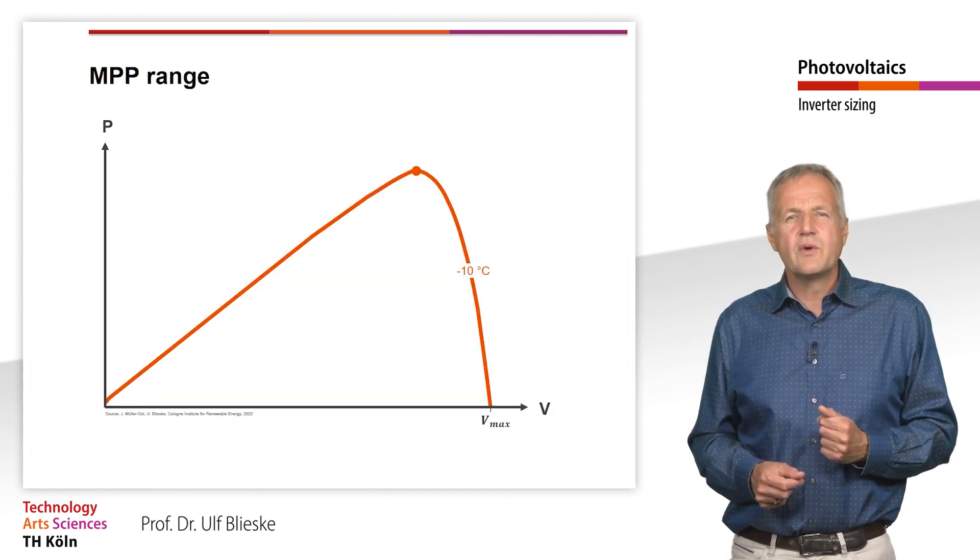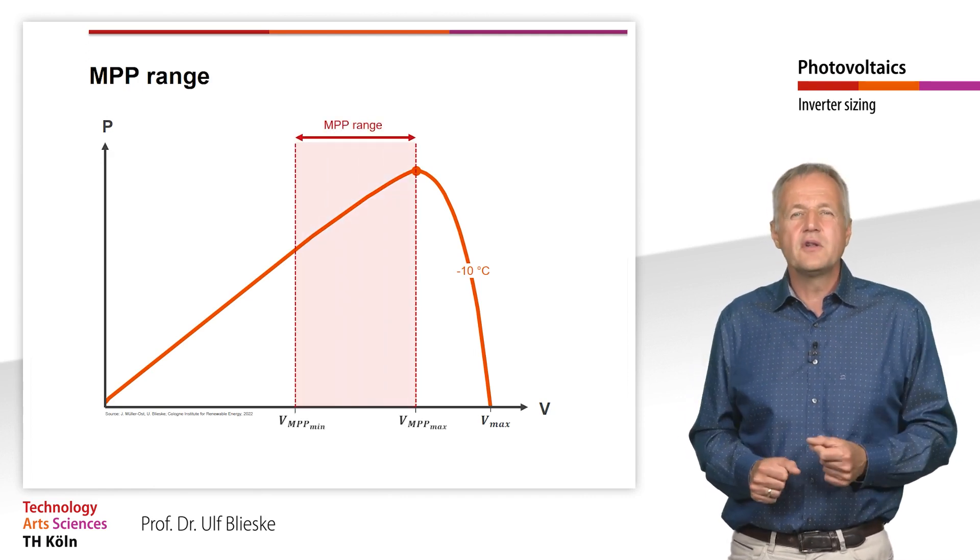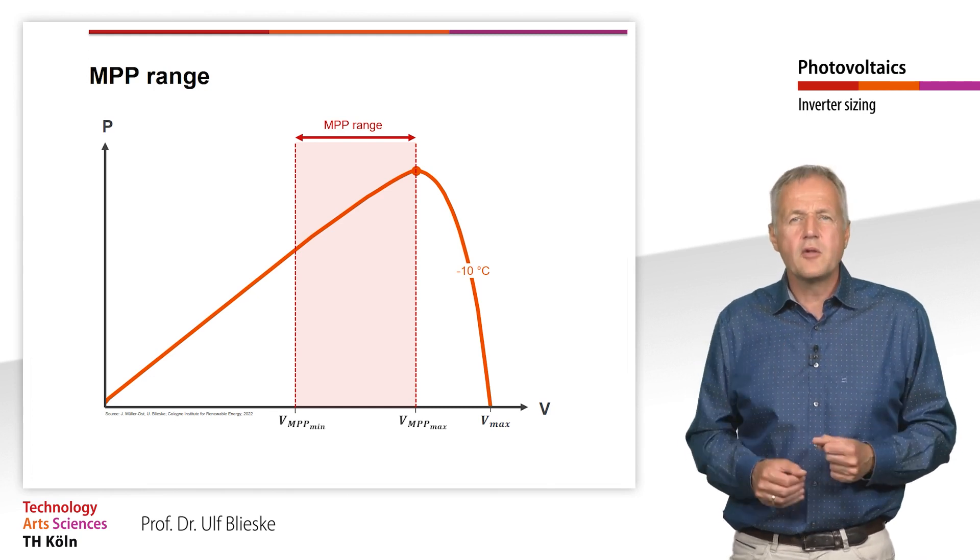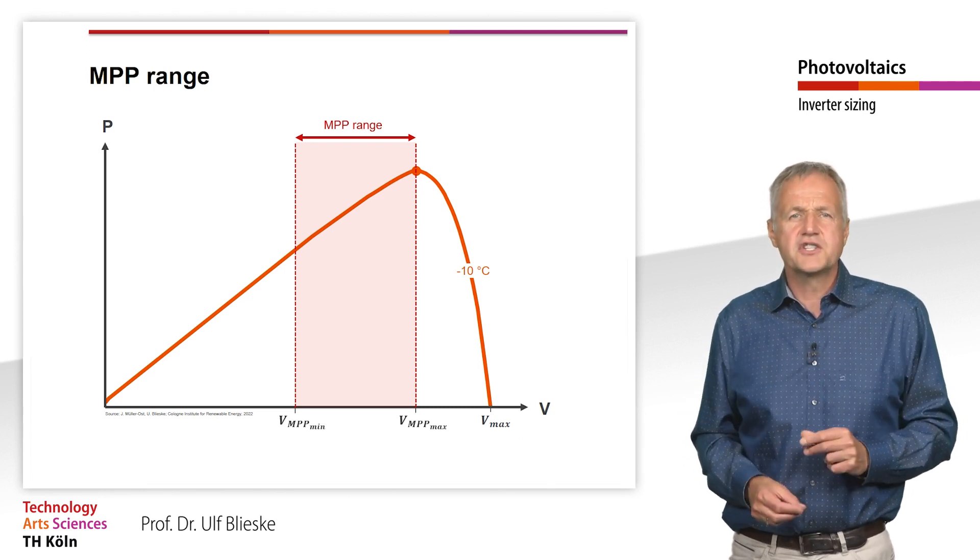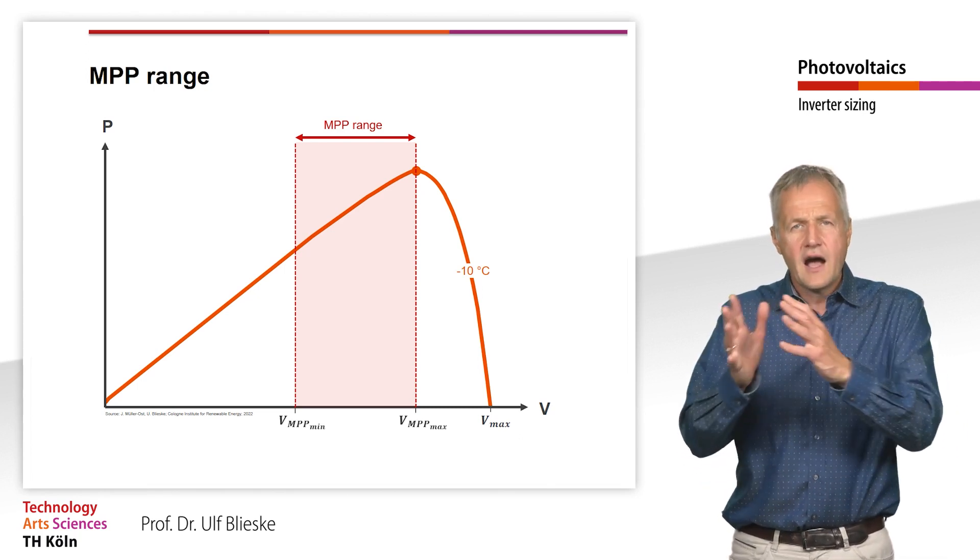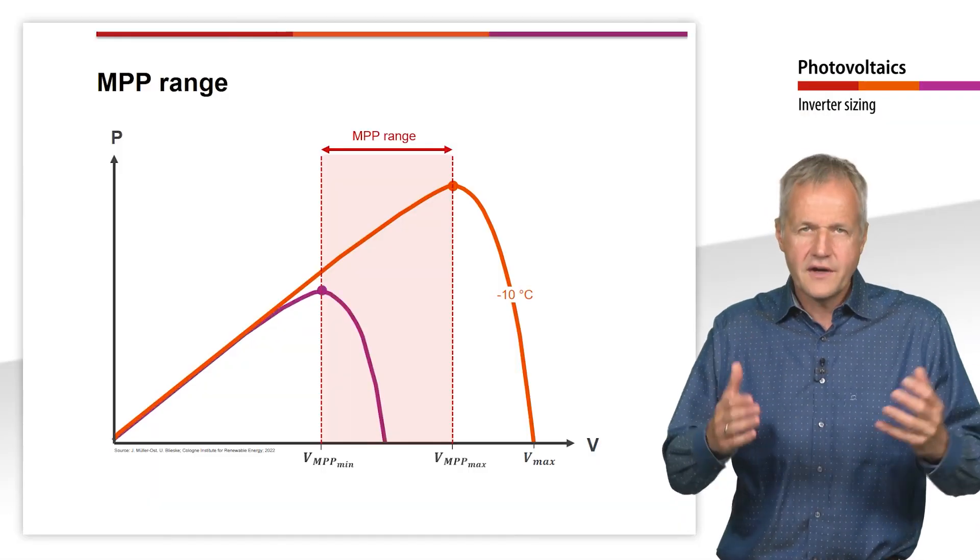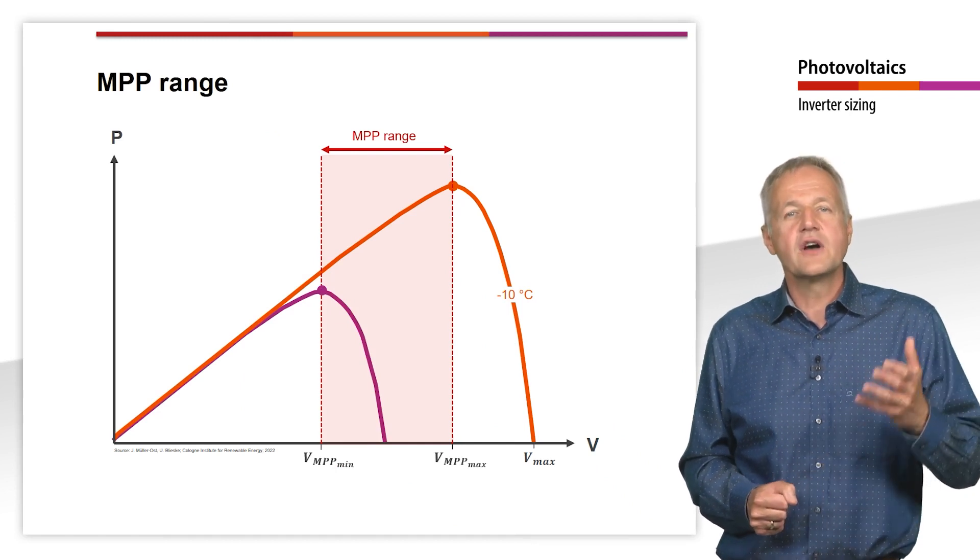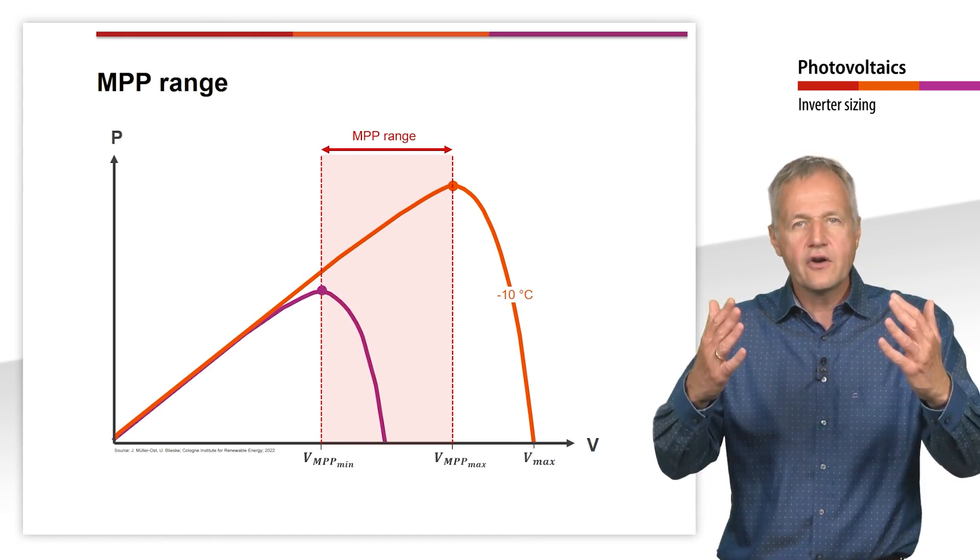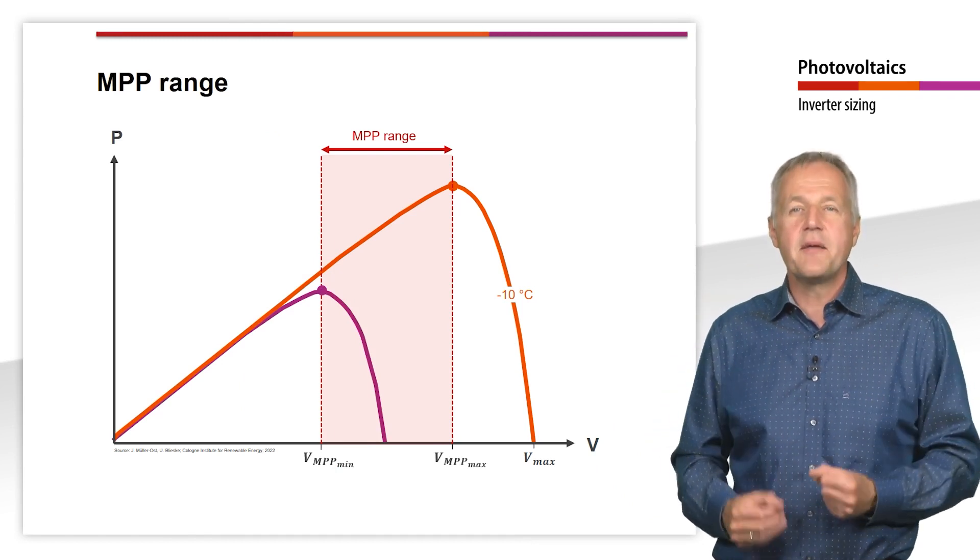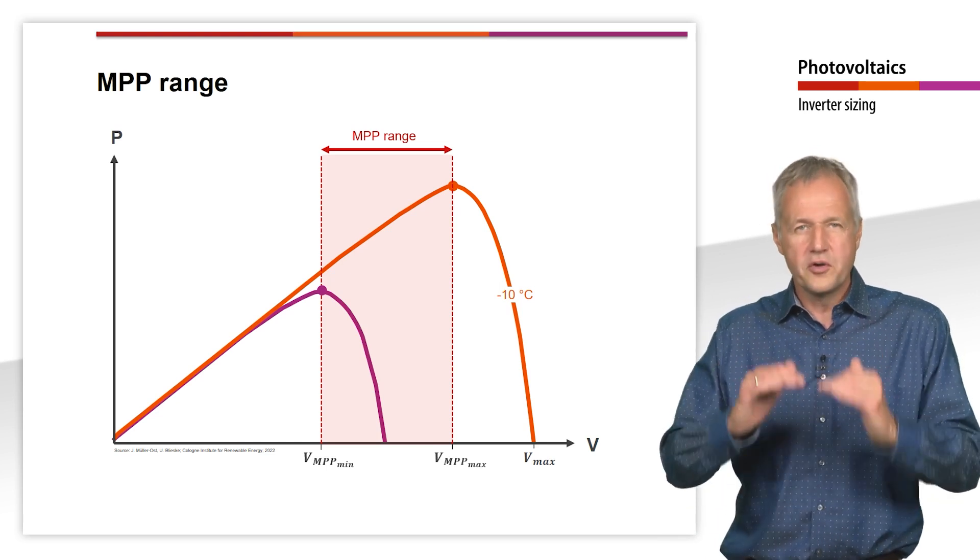The next sizing condition we will deal with is the MPP tracking range of the inverter. If possible, the inverter should be able to set the optimal operating point at the generator even in extreme situations, that is, at very high or at very low MPP voltages. In contrast to the last criterion, however, the inverter will not be damaged if the generator voltage should be somewhat higher or lower since the MPP voltage is inevitably always lower than the open circuit voltage.